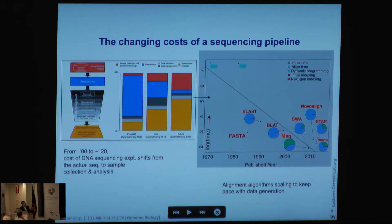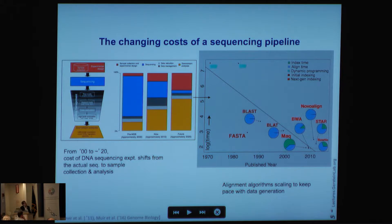What's really neat is there's been a parallel Moore's Law development in the mapping algorithms used in bioinformatics. This picture shows the speed of various algorithms published on a log graph. You can see early algorithms using dynamic programming, next-generation algorithms such as BLAST that use hashing, and then modern algorithms such as MAQ or BWA that use sophisticated techniques like the Burrows-Wheeler transform — and you can see a very nice exponential scaling.